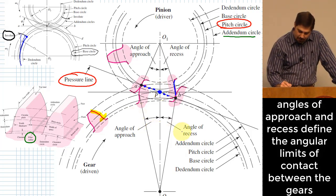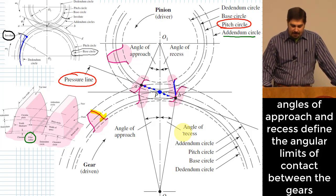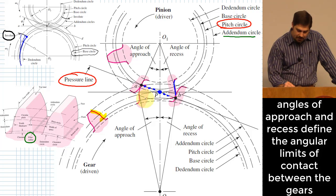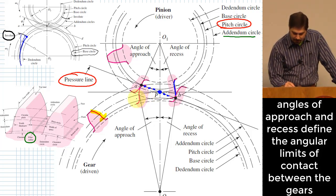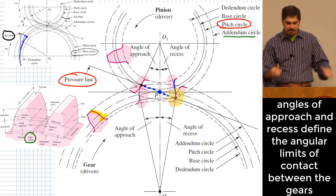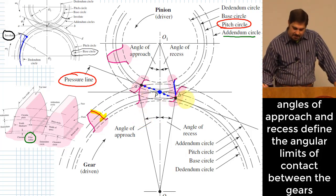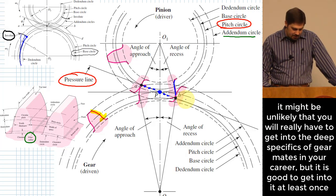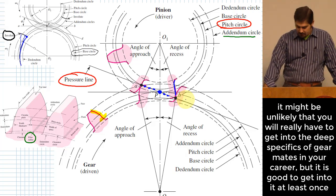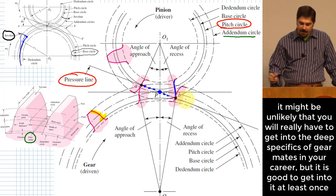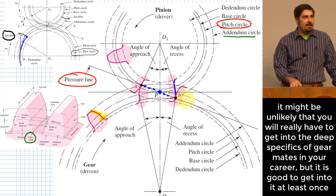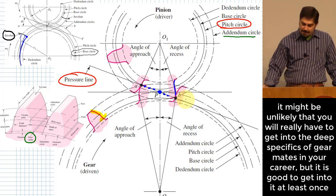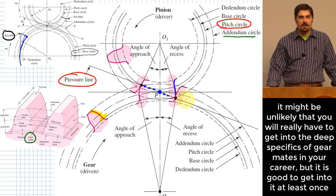We also have the angle of approach and the angle of recess. These give an idea of where the edge of a tooth is when it starts to come into contact versus where it is when the teeth leave contact. So those two angles define where contact begins and ends between mating teeth. I have a homework assignment for you involving specifying some of the parameters that go into gear mating — it's relatively simple geometry. I wanted to cover this terminology before getting into today's problem.